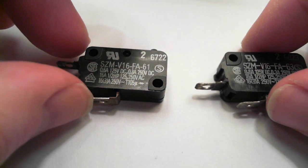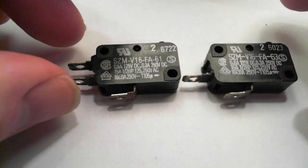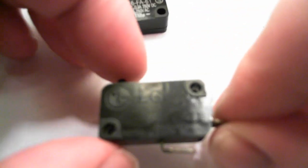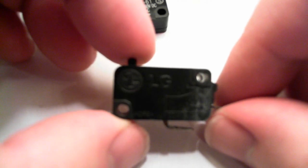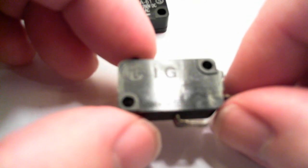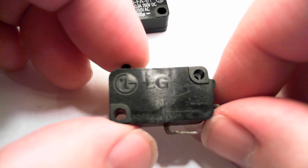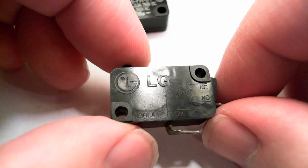There is a single pole, single throw, which has got a normally open on it. This one is push to make. Basically, single pole means you can only put one connection through it. Either positive, negative, whatever. Single gang.